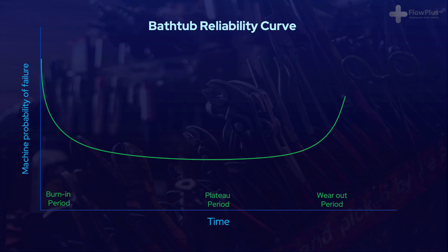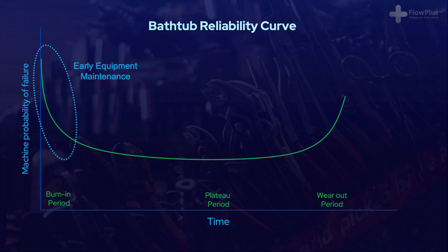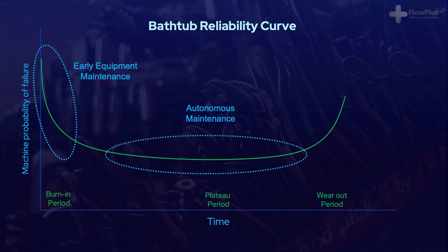It wouldn't be possible to talk about TPM and not mention the classic bathtub reliability curve. The bathtub curve shows how throughout time equipment failure probability changes. To some people's surprise, when equipment is new it often has the highest chance of failure. It then plateaus, and once the machine becomes worn and aged the chance of failure rises again. TPM targets all three aspects of the curve. Failures are reduced in the burn-in period by early equipment maintenance and an improved understanding of equipment use. Standards may not have been written, operating modes are not fully understood, and the machine hasn't been tweaked to a quality capable stage yet — the six big losses of OEE haven't been quantified and acted upon.